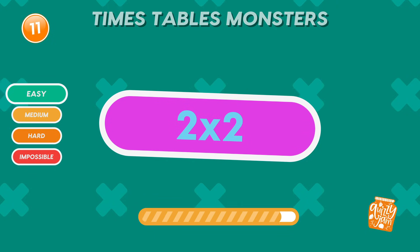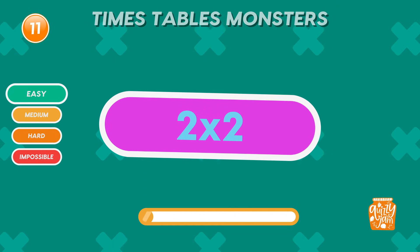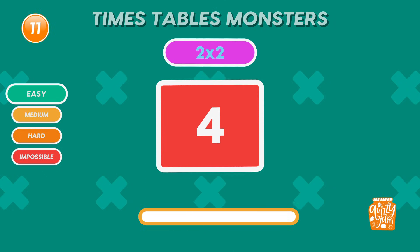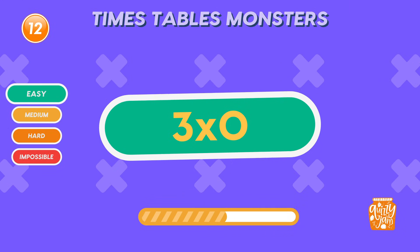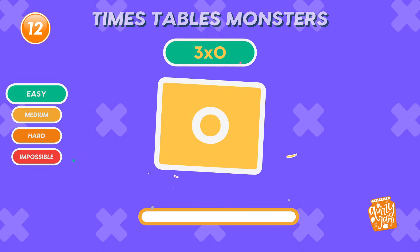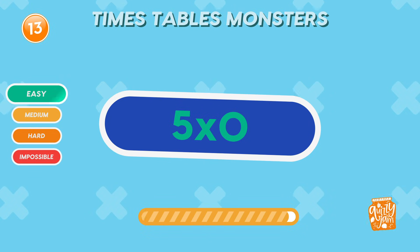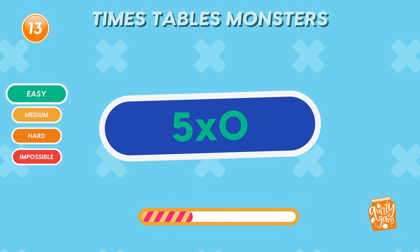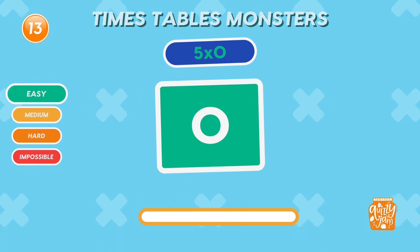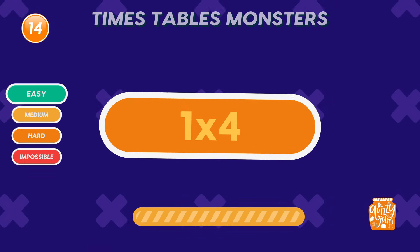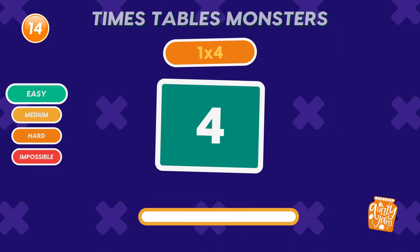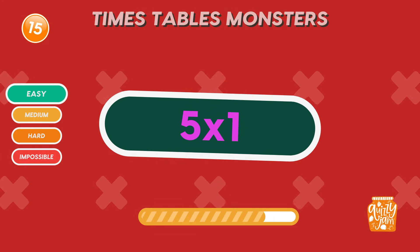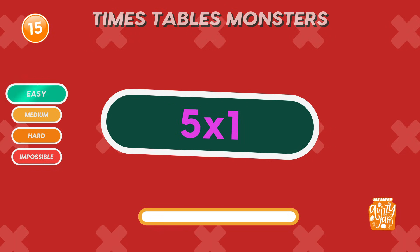What is 2 times 2? 4. Well done! You're learning fast! What is 3 times 0? 0. That's right! Zero times anything is zero. What is 5 times 0? 0. Great thinking! What is 1 times 4? 4. Nice job! What is 5 times 1? 5. Awesome job!